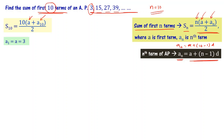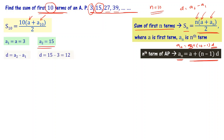We already know a equals 3. We need d, the common difference. d equals a₂ minus a₁. The second term is 15, so d equals 15 minus 3, which equals 12. Substituting into the formula: a₁₀ equals 3 plus (10 minus 1) times 12, which is 3 plus 9 times 12, giving 3 plus 108, equal to 111.